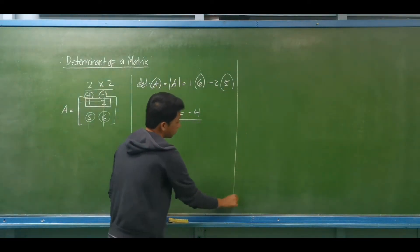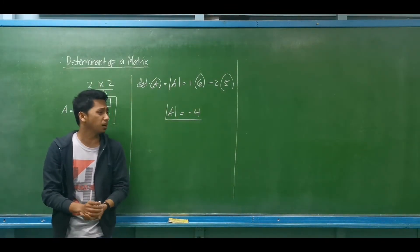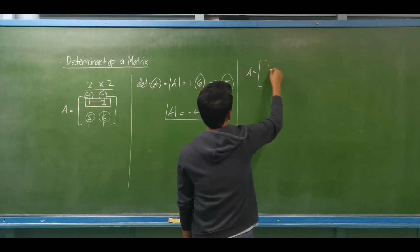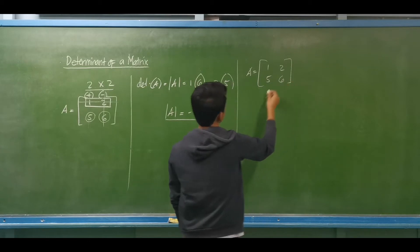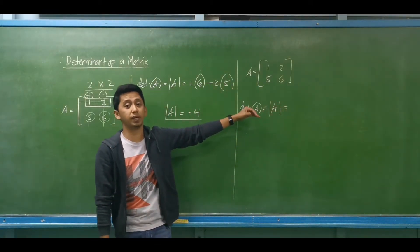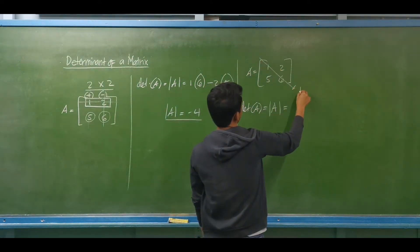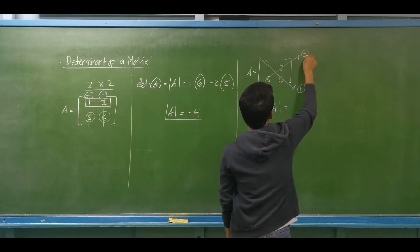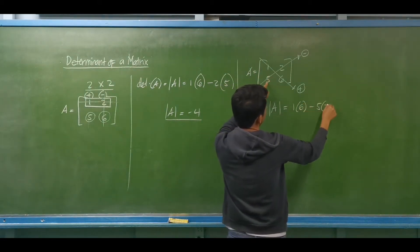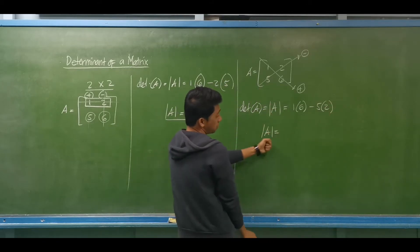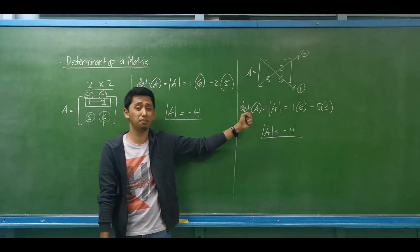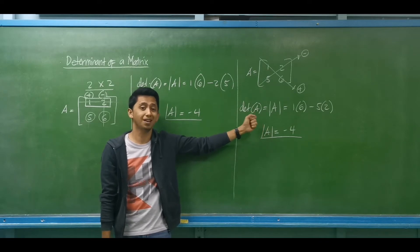For a 2 by 2 matrix, we can also use the diagonal method, or what some references call the basket-weave method. We have matrix A with elements 1, 2, 5, and 6. The determinant equals the product of the downward-right diagonal elements (positive) minus the product of the upward-right diagonal elements (negative). That is 1 multiplied by 6 minus 5 multiplied by 2, giving the same answer: the determinant of matrix A is negative 4.